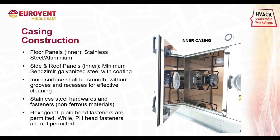Starting with the casing: as per DIN 1946 Part 4, the floor panels for the casing should be made of stainless steel or aluminium, as the floor panels are in contact with water and there should be no corrosion. However, the side and roof panels can be made of galvanized material with coating. The internal wall surface should be smooth without any grooves and recesses. The profile and the panel should be flush with each other so that it is very easy to remove any dust accumulated on the surface. Hardware and fasteners should be made of stainless steel.